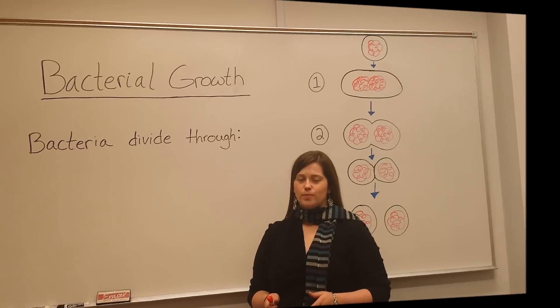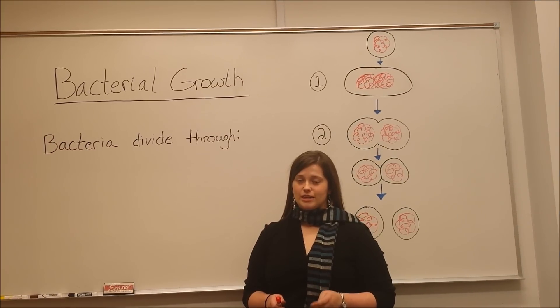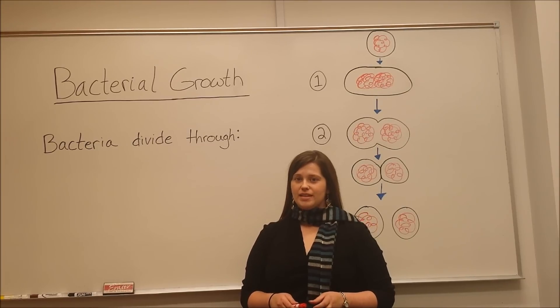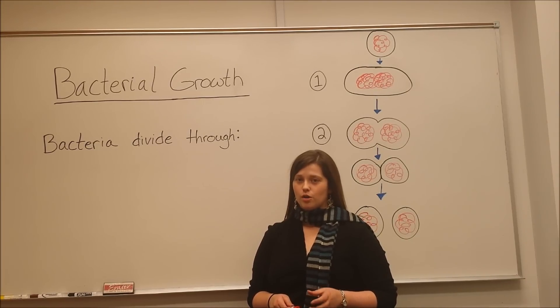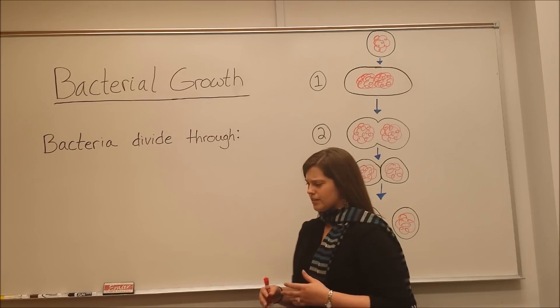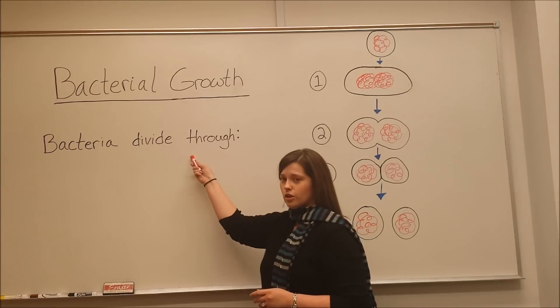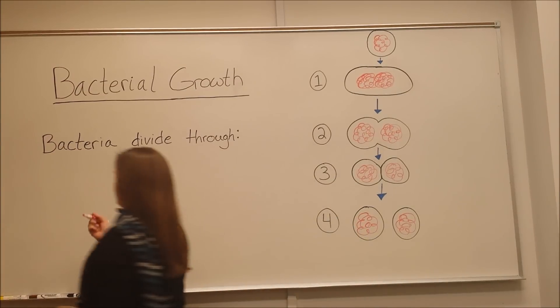So we just talked about the four phases of bacterial growth. Now I want to talk a little bit more about what happens in phase two, the logarithmic phase. That's where the bacteria are exponentially dividing. It's very rapid, and it occurs through a process called binary fission.